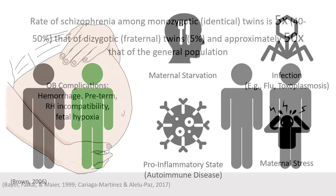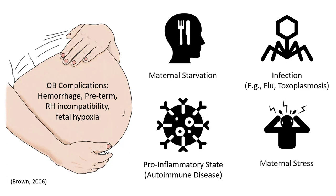Several perinatal factors have been implicated in the development of enduring psychotic illness. These include obstetric complications such as hemorrhage, preterm labor, RH incompatibility, and fetal hypoxia. Maternal factors such as starvation, a pro-inflammatory state as is the case with autoimmune disease, stress, and infection have also been implicated. An increase in the incidence of schizophrenia is associated with prenatal exposure to maternal infections: a 20-fold increase with rubella, a 7-fold increase with influenza, and a 2.5-fold increase with toxoplasma gondii.